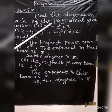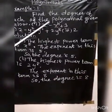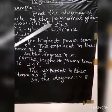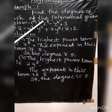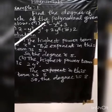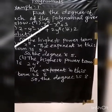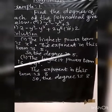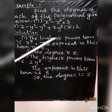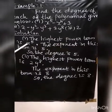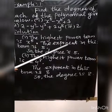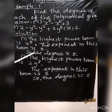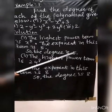The highest power term is X Power 5. The exponent is 5. Therefore, the degree of the polynomial for the first sum is 5.